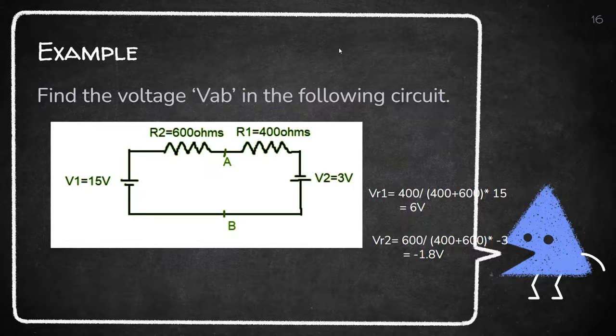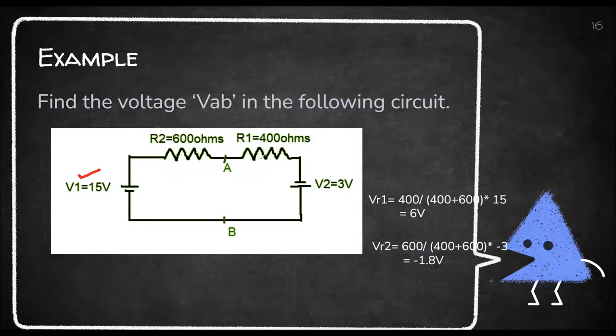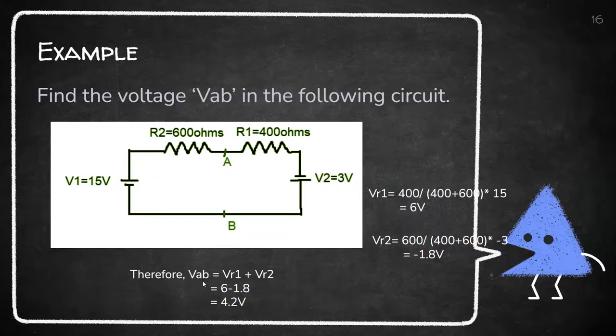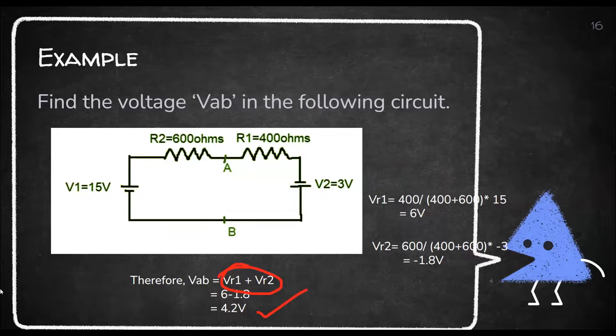Now I got it. First I found out VAB when I considered V1. Second time, I considered the other source and got the second voltage as well. Now what to do? Both are important. If you've got two kids, both kids are important. If both come with complaints, you'll listen to one at a time. That's why we closed one's mouth, listened to the second one's complaint. Then closed the other's mouth and listened to what this one had to say. What will you do for the decision? You'll add both, right? So VAB will be VR1 plus VR2. Since this is negative, it will be 6 minus 1.8. The answer is 4.2 volts.